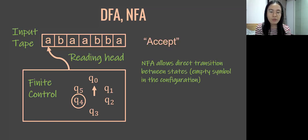After reading all the symbols of the string, if the finite control is in the final state, which is Q4 here, the input string is considered accepted. Otherwise, the input string is not accepted.